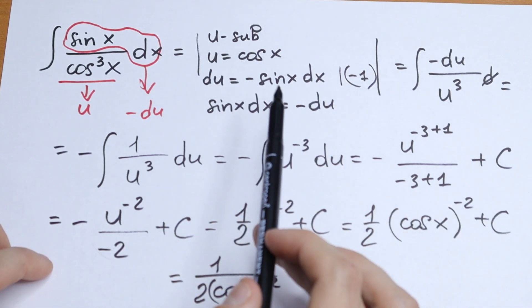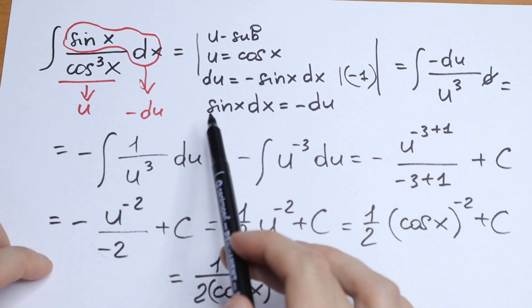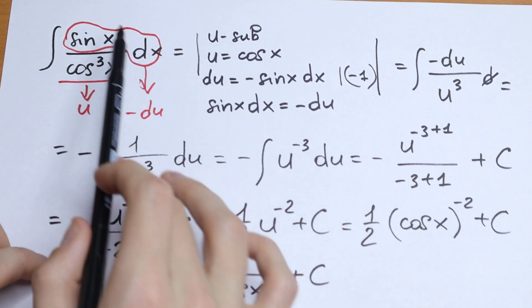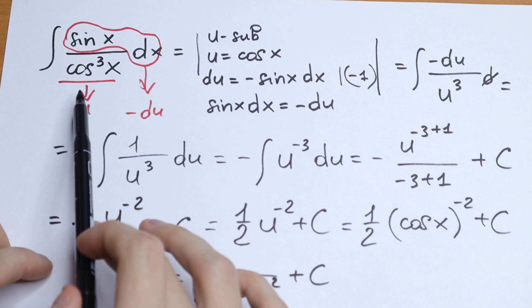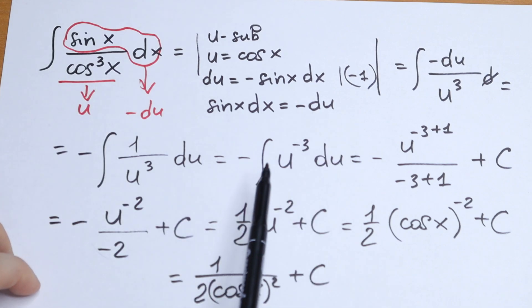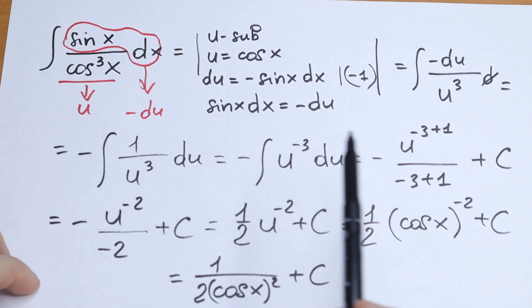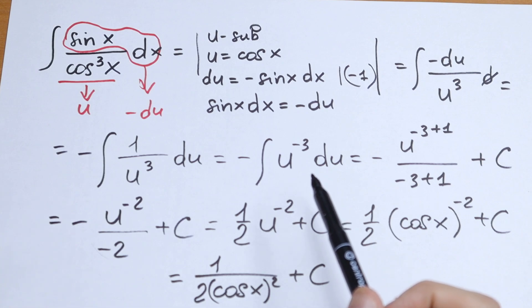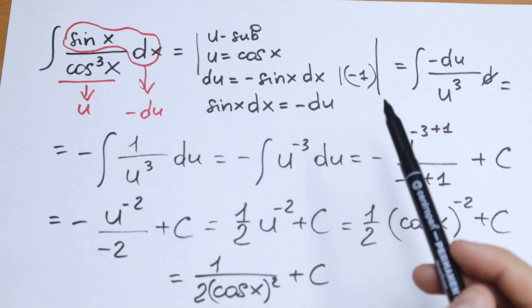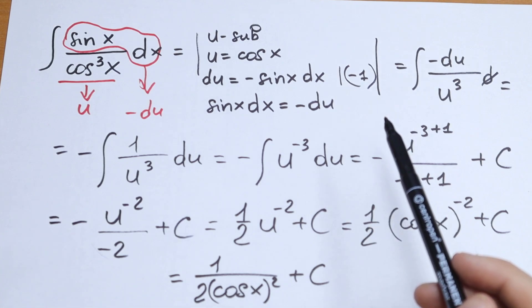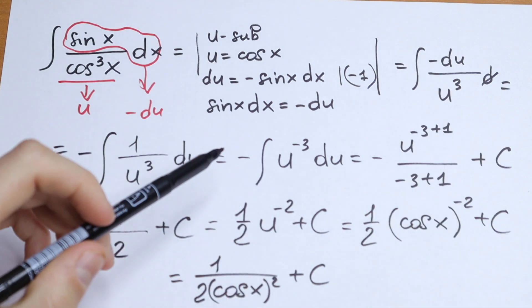So we used a u-substitution. It's a really good case to use it because this we change as minus du, and this is our u. And a classic integral right here. So if you have any questions, if you have any suggestions, write your suggestion in the comments. Thank you for watching and see you in the next videos.